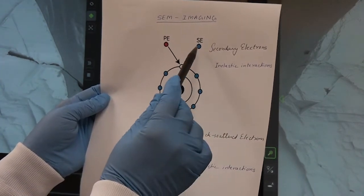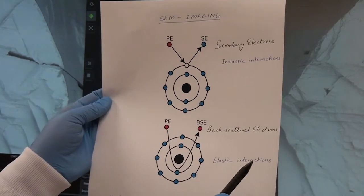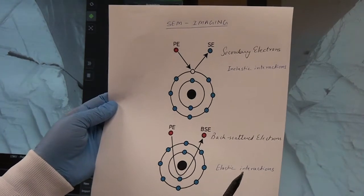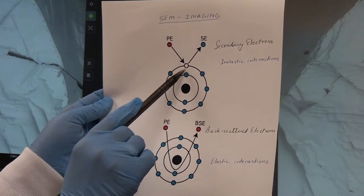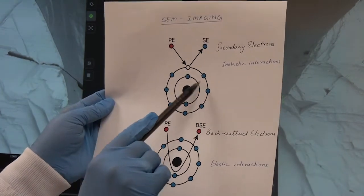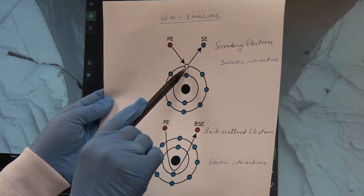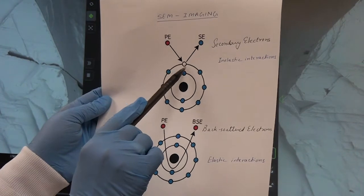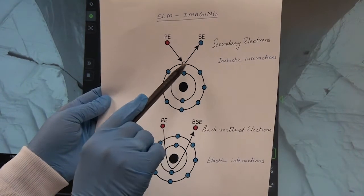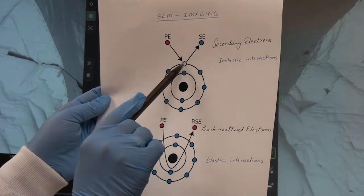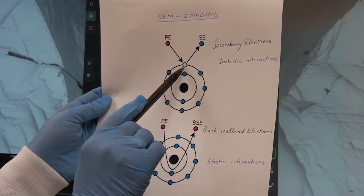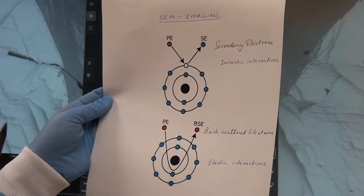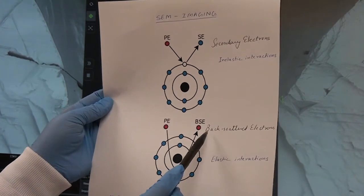At the atomic level of the sample, when the electron beam hits the electrons in the sample atoms, these electrons get energized and are knocked out of the atoms. As they knock out, these are called secondary electrons, and these are inelastic collisions.